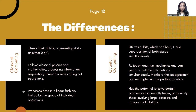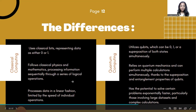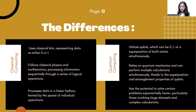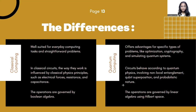Classical computing processes data in a linear fashion, limited by the speed of individual operations, whereas quantum computing has the potential to solve certain problems exponentially faster, particularly those involving large data sets and complex calculations. Classical computing is well suited for everyday computing tasks and straightforward problems, whereas quantum computing offers advantages for specific types of problems like optimization, cryptography, and simulating quantum systems.